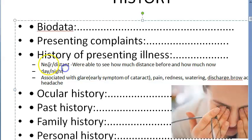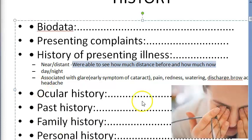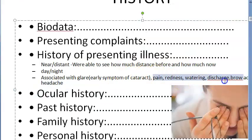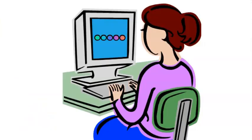If the patient reports improved near vision, this suggests nuclear cataract, because the nucleus becomes sclerosed, changing the refractive index of the lens. In nuclear cataract, distant vision reduces over time while near vision improves. If there is pain, redness, watering, and discharge along with cataract, this indicates some other condition coexisting with the cataract.